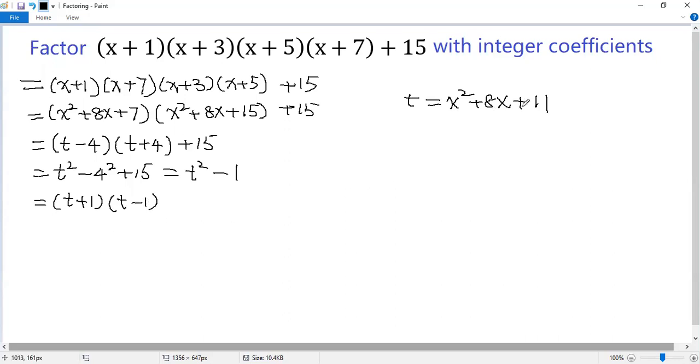Now we can get back to x. t equals x squared plus 8x plus 11, and then plus 1, so plus 12. The second part, x squared plus 8x plus 11, but minus 1, so plus 10.